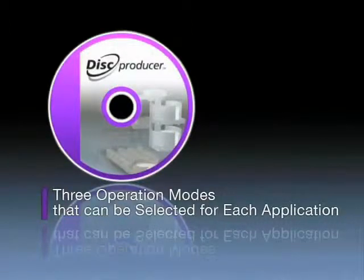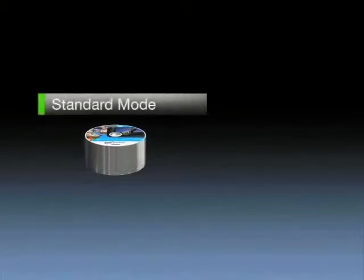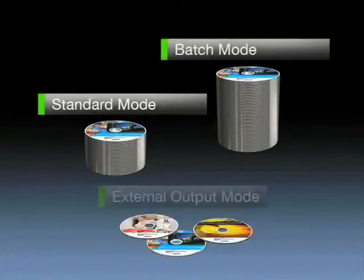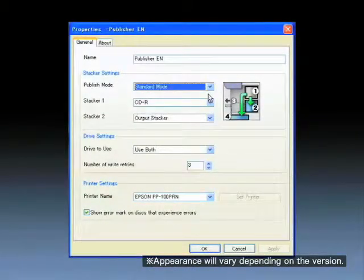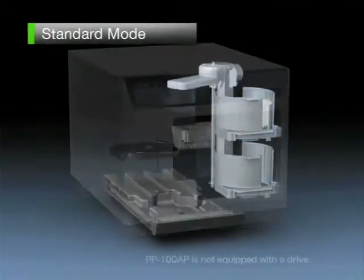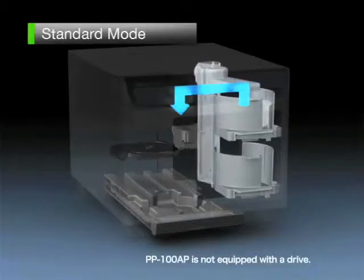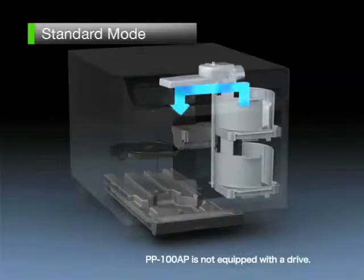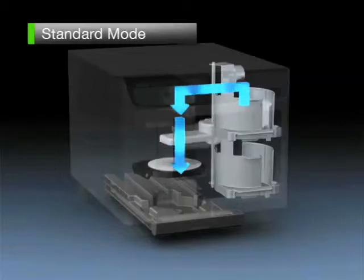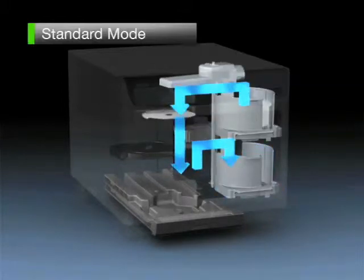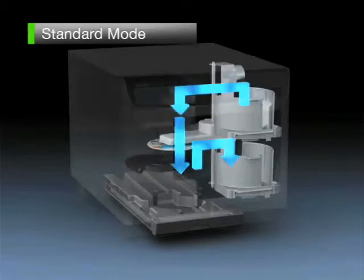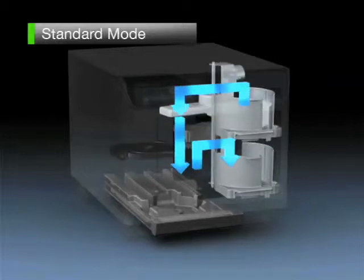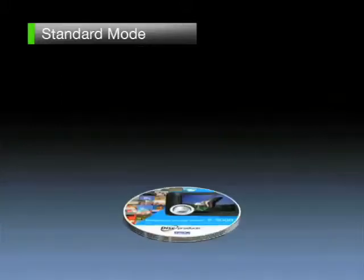There are three operation modes that can be selected for each application: standard mode, batch mode, and external output mode. For the output of 50 discs or less, set standard mode and then place the discs in stack one. Discs will be transported and data writing will be carried out in the two drives. After label printing is completed, the discs will be output to stack two. Up to 50 discs can be created in this mode.